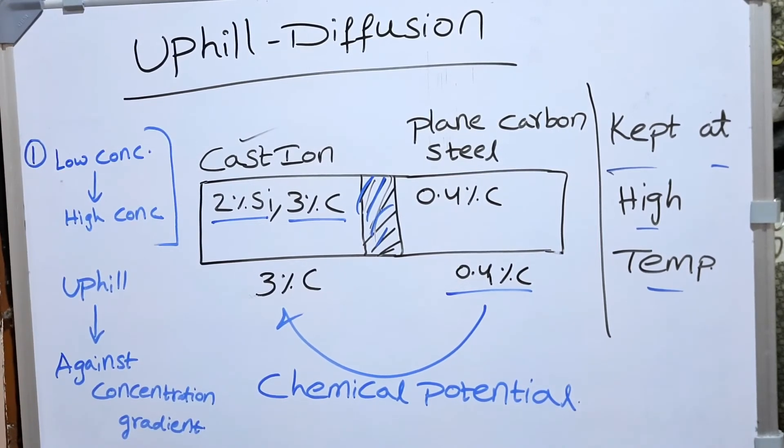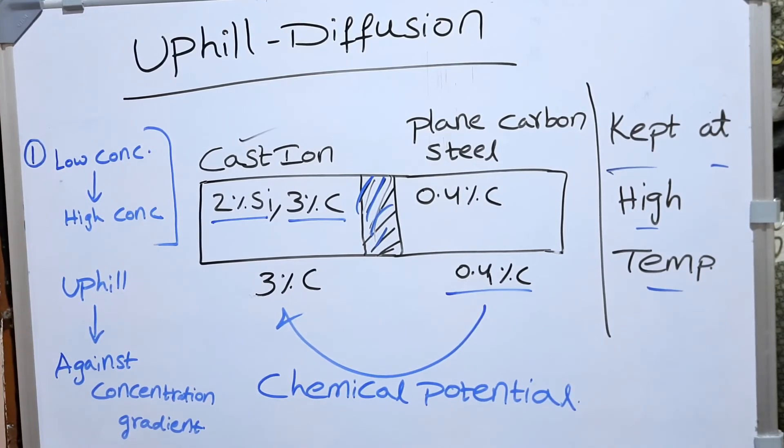Here, because the carbon is transferring from low concentration to high concentration, it is because of the chemical potential difference. It is called uphill because we are going against the concentration gradient.